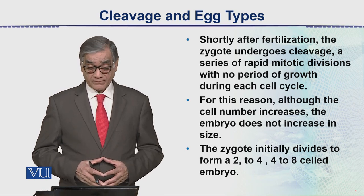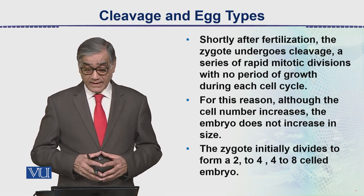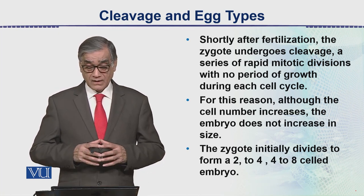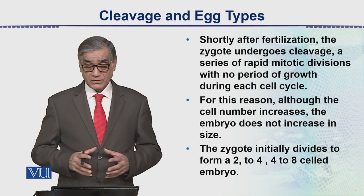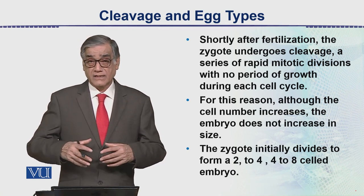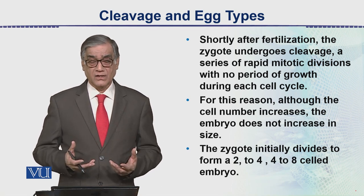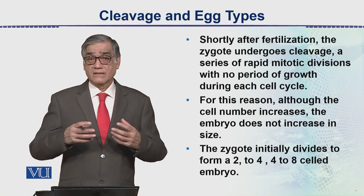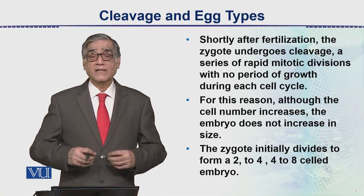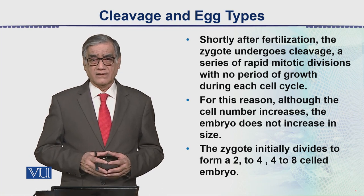Shortly after fertilization, the zygote undergoes cleavage — a series of rapid mitotic divisions with no period of growth during each cycle. In this process, the G phase is bypassed, and consequently the daughter cells are formed very quickly. There is a very fast type of cell division.